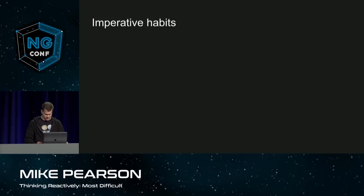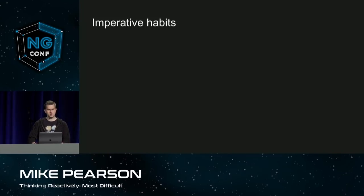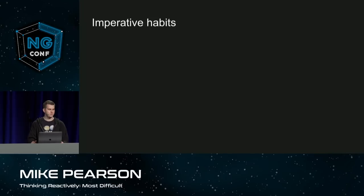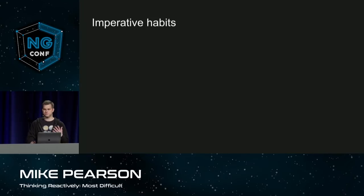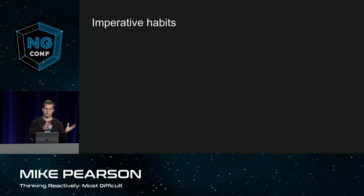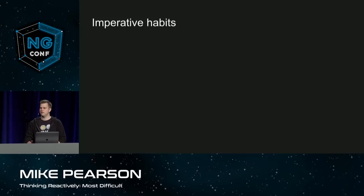About a year ago, I was working on a tournament app where users could follow different teams and get notified whenever there was a win or a loss for the team they're following. There was a problem where users were getting notifications when they were supposed to with teams they were already following, but when they went to a team's page and clicked the follow button, they didn't start getting notifications for that team until they refreshed the app.